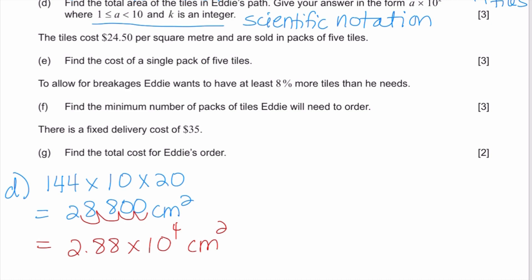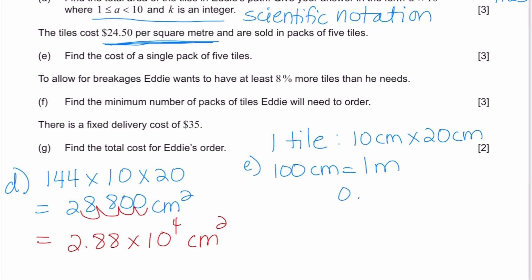Now for part e, it says the tiles cost 24.50 per square meter, so be very careful because if you remember, we just got the answer for area, but we got it in square centimeters. One of the things that we can do is find the area of each tile in square meters. The way we do that is to understand that one tile is going to be 10 centimeters by 20 centimeters, but you know that there's going to be a hundred centimeters in one meter. So that means basically that I have to divide by a hundred to figure out that each tile is going to be 0.1 meter times 0.2 meters, which is 0.02 square meters. This is a conversion question.